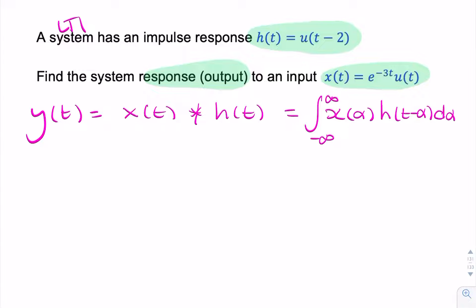So now we simply just plug that in there, and that in there. So minus infinity to infinity, e to the minus 3t, u of t, times u of, sorry, that wouldn't be t, it would be alpha.